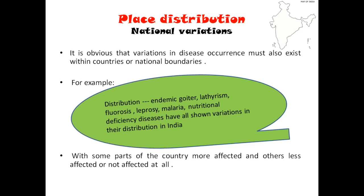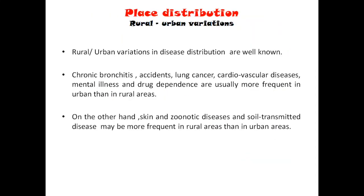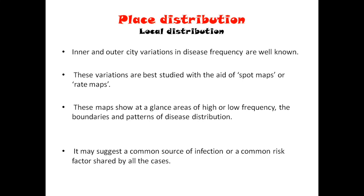Rural-urban variations: certain diseases are very common in rural sectors like periodontal disease; diseases like bronchitis, accidents, lung cancer, and cardiovascular disease are common in urban areas; zoonotic and skin diseases are common in rural sectors. Local distribution: one famous example of how epidemiology came into existence is the work of John Snow — the father of epidemiology — in a cholera case. He did a spot map and found that many casualties were around pump A, which was the contaminated Broad Street pump in London in the 1840s.